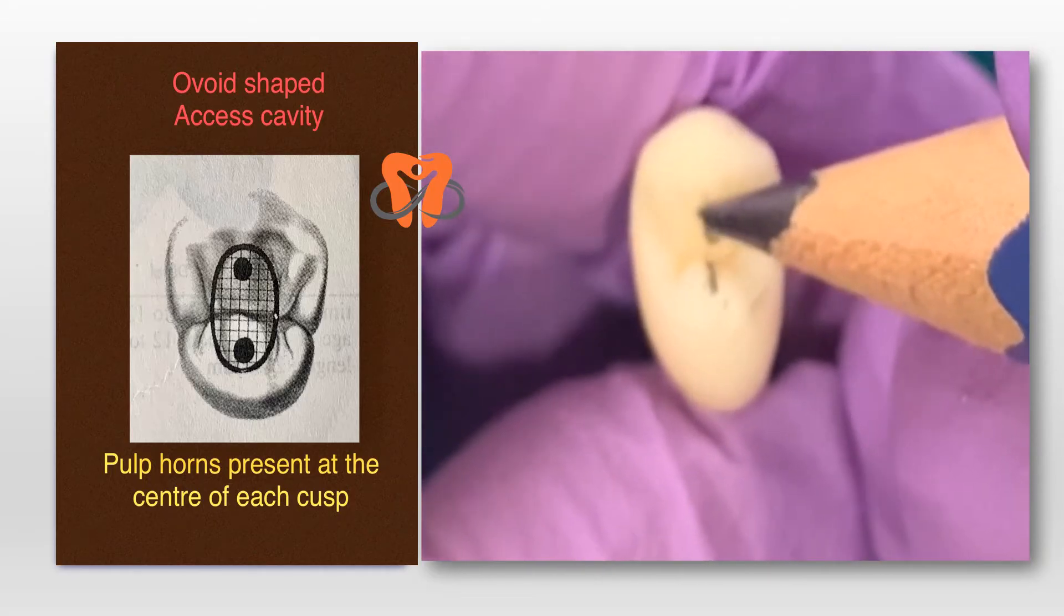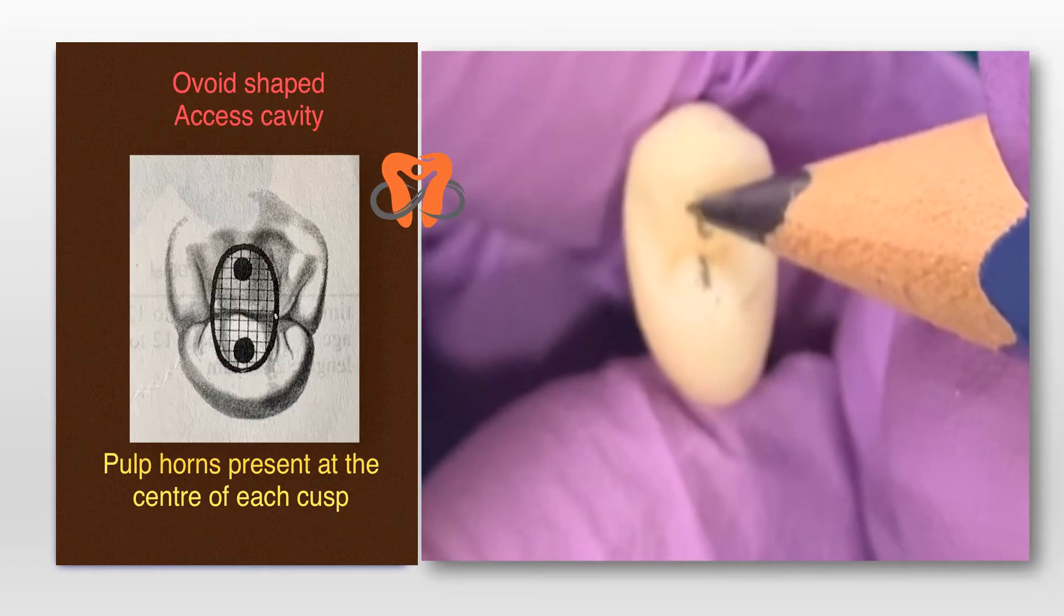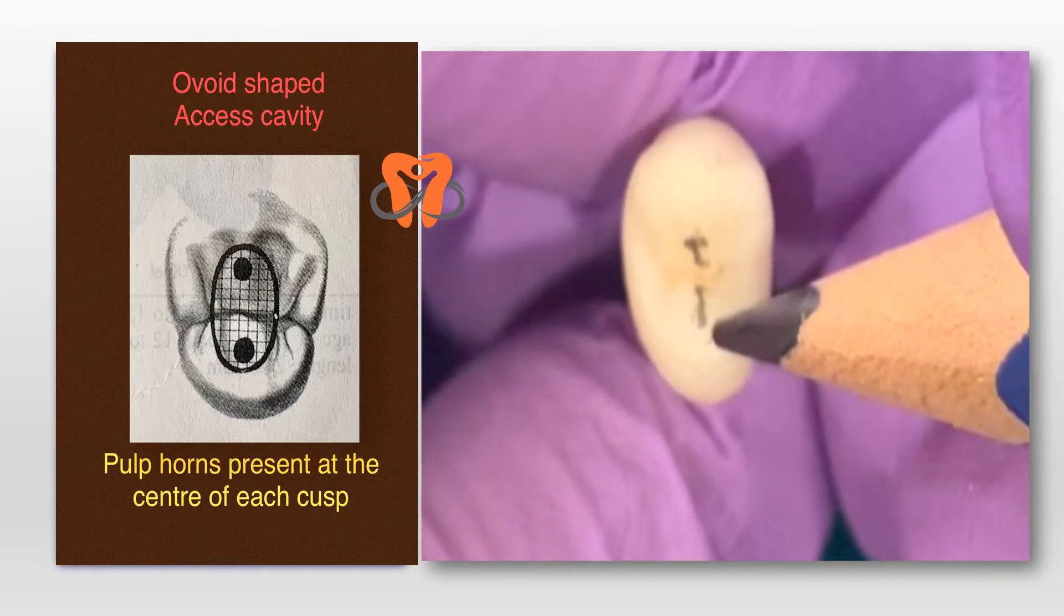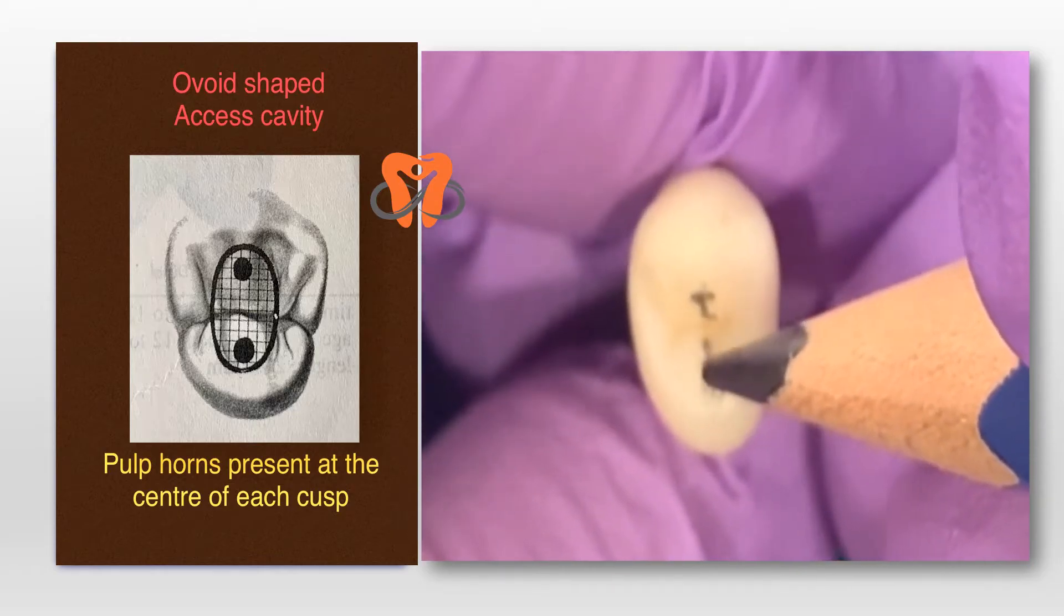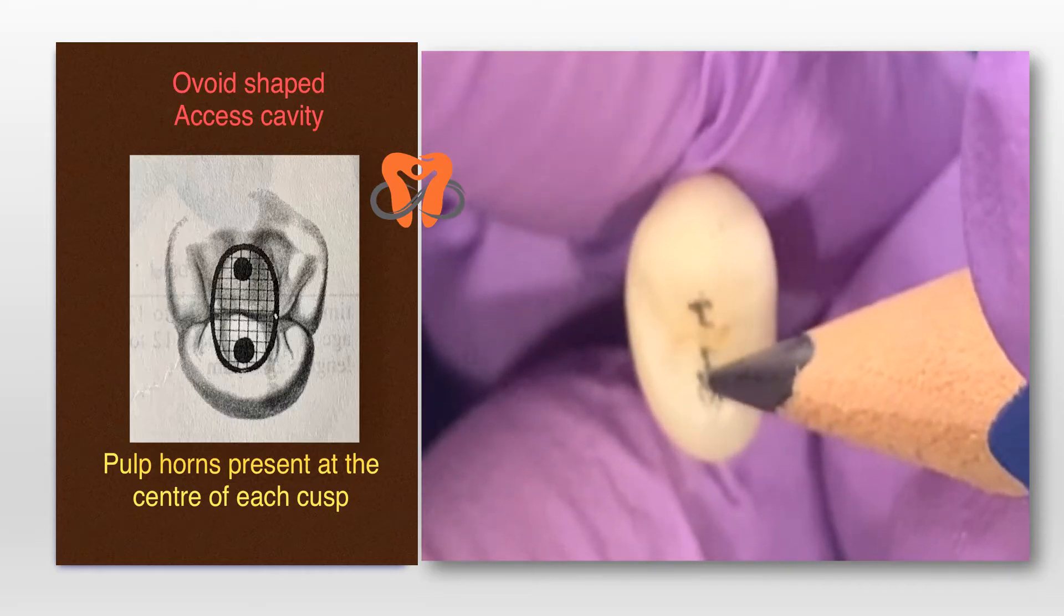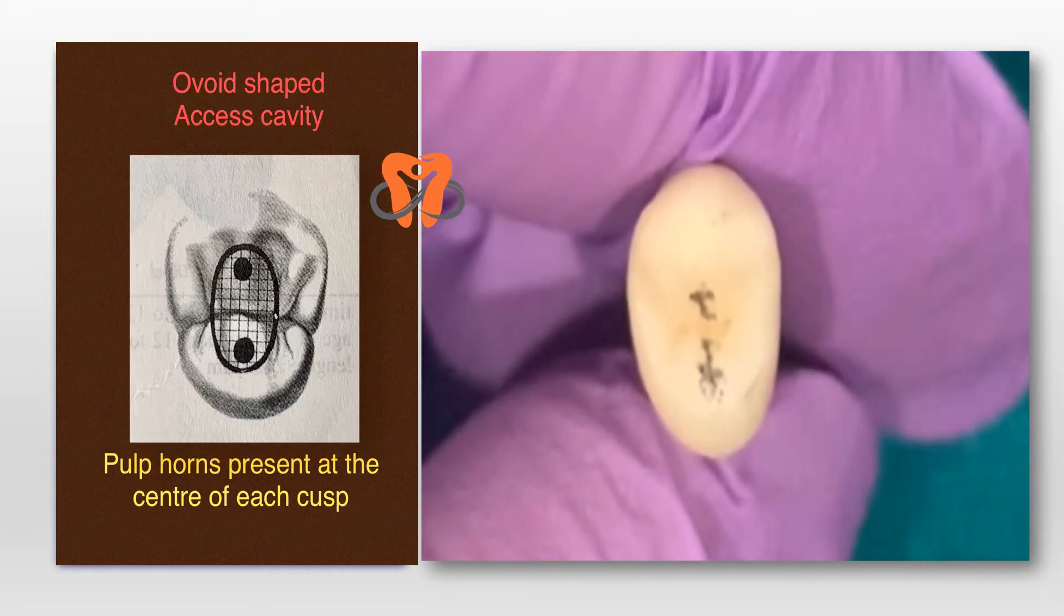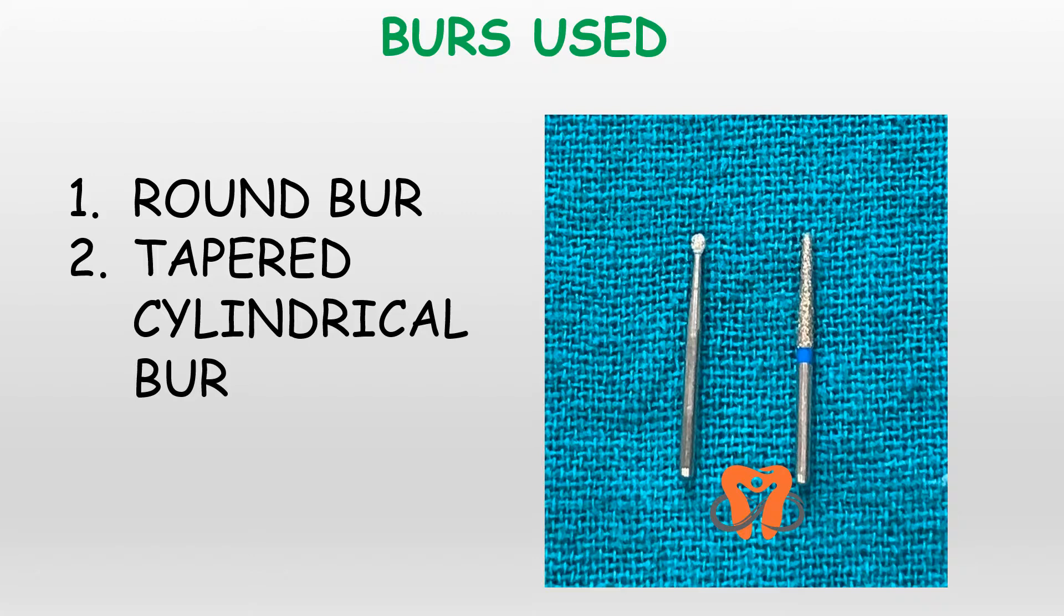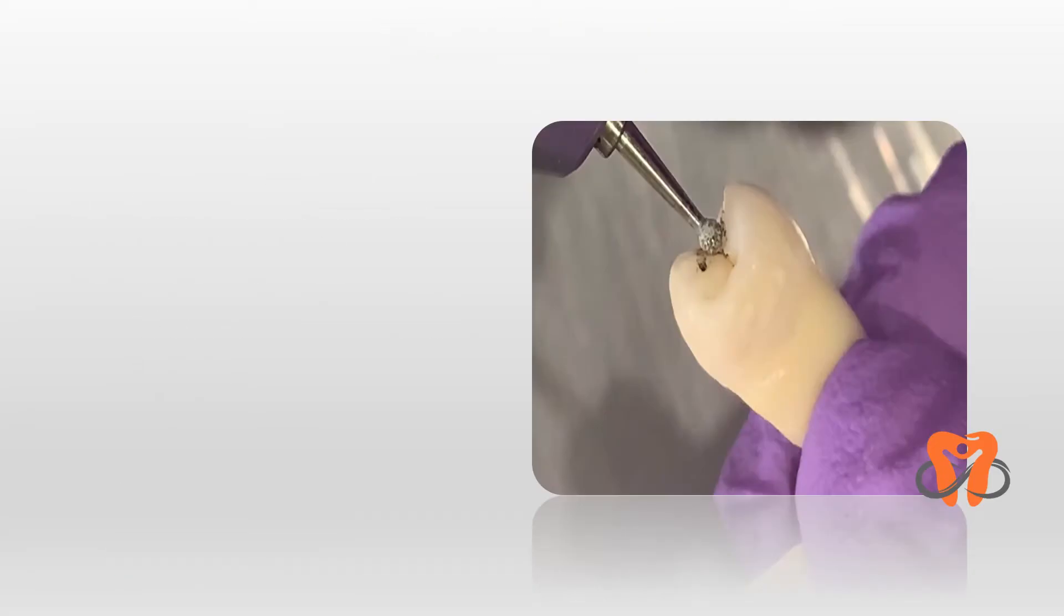The buccal border and the lingual border of the access cavity should not extend beyond these two points. This preparation can be easily done with help of two burrs: the round burr and the tapered cylindrical burr.